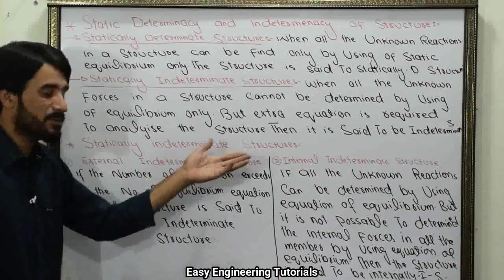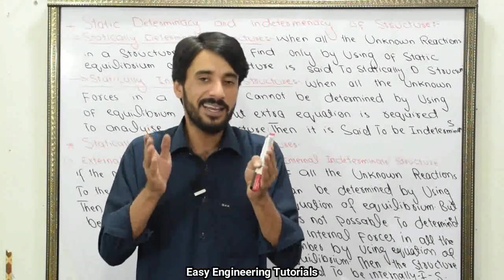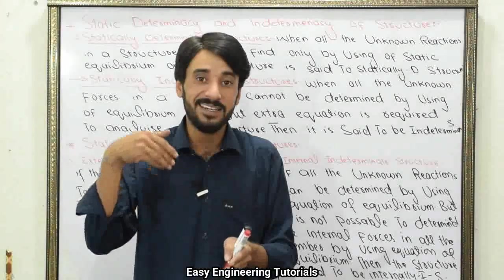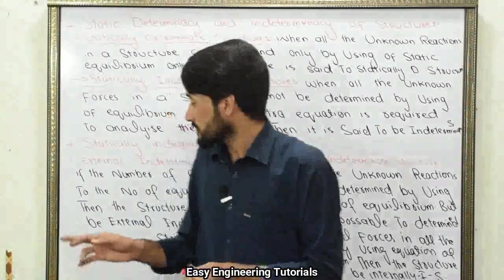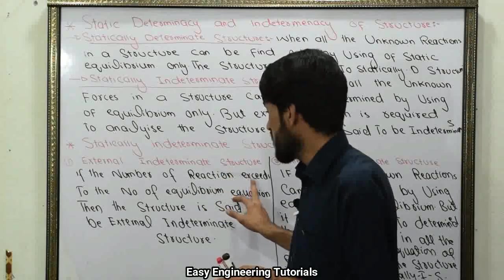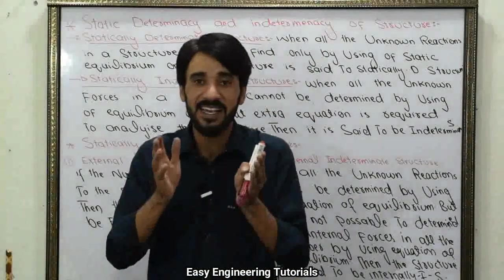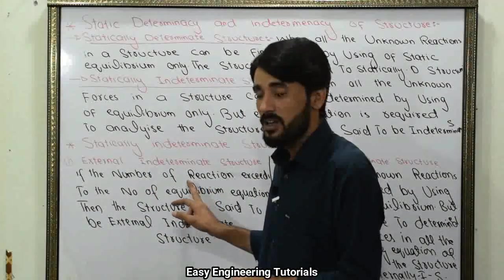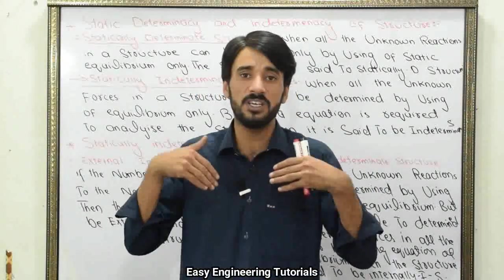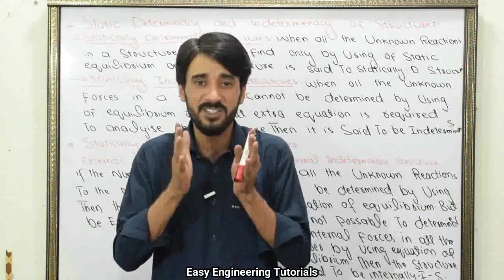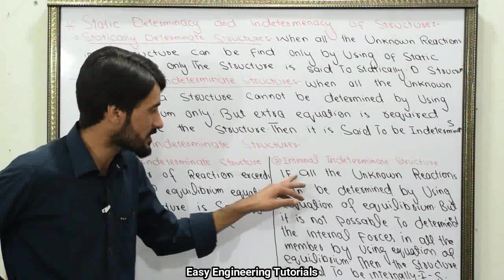Statically indeterminate structure تین types ہے: یا تو وہ external indeterminate ہوگا، یا internal indeterminate ہوگا، یا both external and internal indeterminate ہوگا۔ If the number of reaction forces exceeds the number of equations of equilibrium, then the structure is said to be externally indeterminate. اگر کسی structure میں unknown reaction forces کی تعداد equation of equilibrium سے زیادہ ہو جائے تو اس قسم کے structure کو external indeterminate structure کہیں گے۔